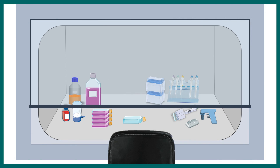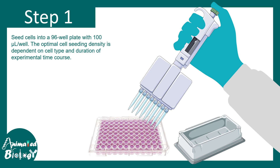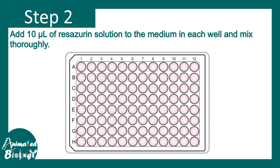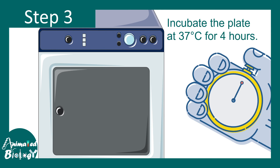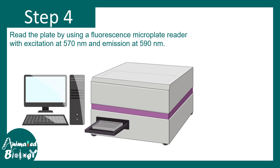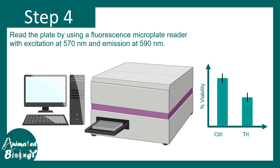To perform this assay, you need a cell culture hood. First, seed the cells you want to assess — this may include your treatment condition or your control condition. As step 2, add 10 microliters of resazurin to the solution. Then incubate the plate at 37°C for about 4 hours. After incubation, fluorescence should develop and can be monitored using a plate reader, with excitation around 570 nm and emission around 590 nm, allowing you to calculate cell viability.